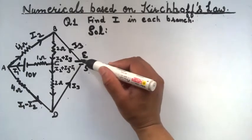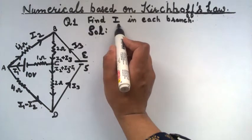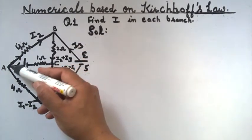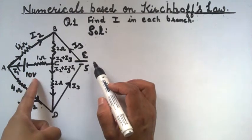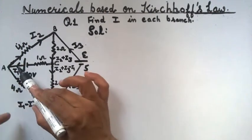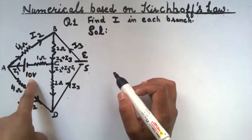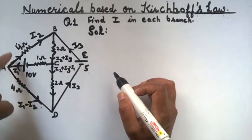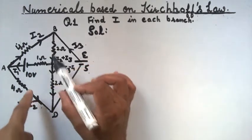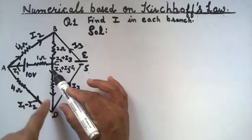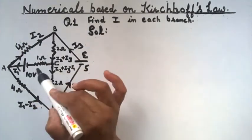Now let's solve some numericals from NCERT and board exams based on Kirchhoff's law. We have to find the value of current in each branch of this network with multiple currents and resistances. Recall: moving from negative to positive gives a voltage rise taken as positive; moving across a resistor in the direction of current is negative; opposite to current direction is positive. We will consider each mesh and apply KCL and KVL accordingly.